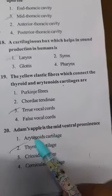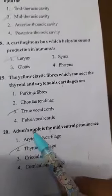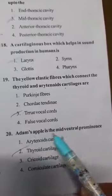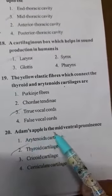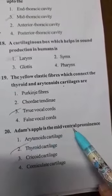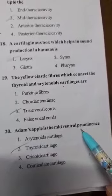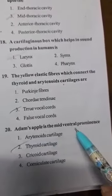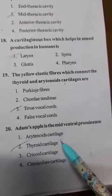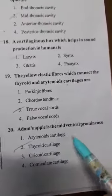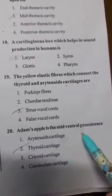Adam's apple is found in male human beings. It is the mid-ventral protrusion or prominence of the thyroid cartilage.